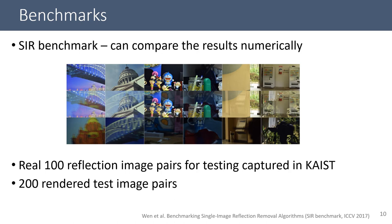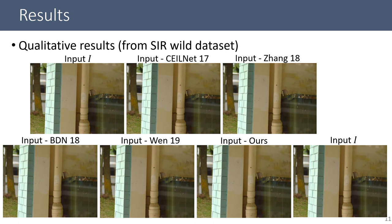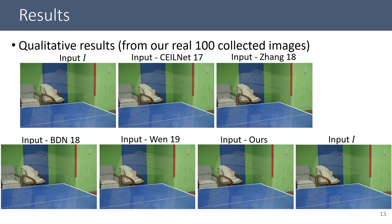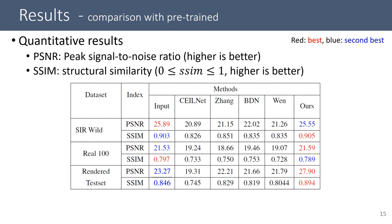For the result comparison, we utilize two real image datasets and one rendered test set. This is an example of the SIR wild dataset's result comparison — the weak white line is the reflection. Some methods remove wrong parts or change the overall color tone, but ours achieved the most similar result to ground-truth imagery. This is another example result comparison from our 100 collected real images; ours can remove the reflection well. We also did numerical comparison, and as the quantitative results show, ours achieves the best result among the other methods.